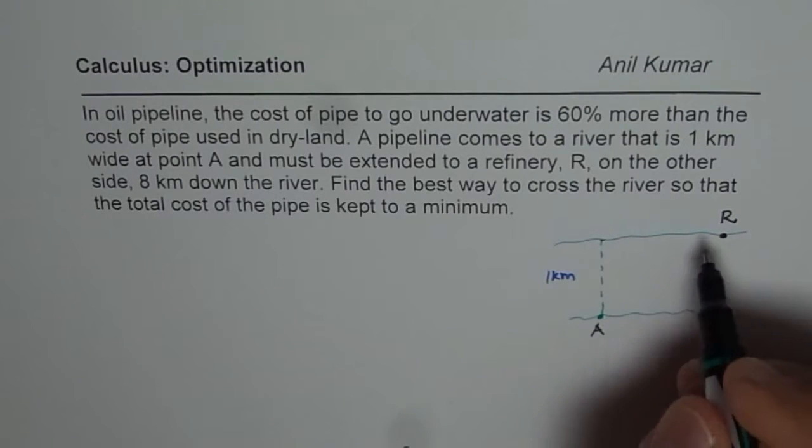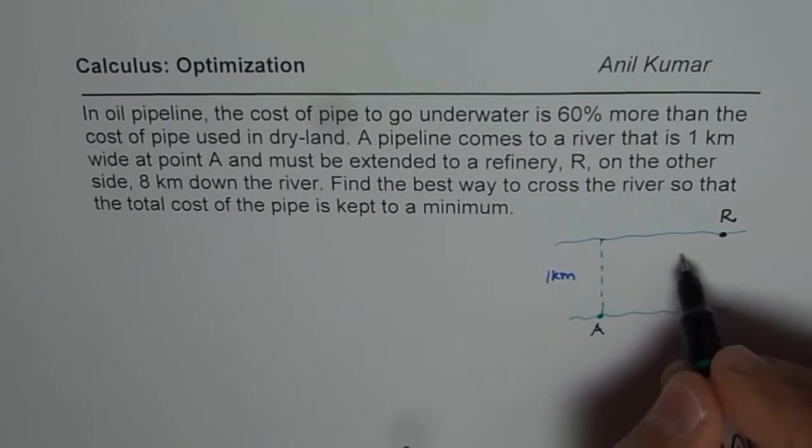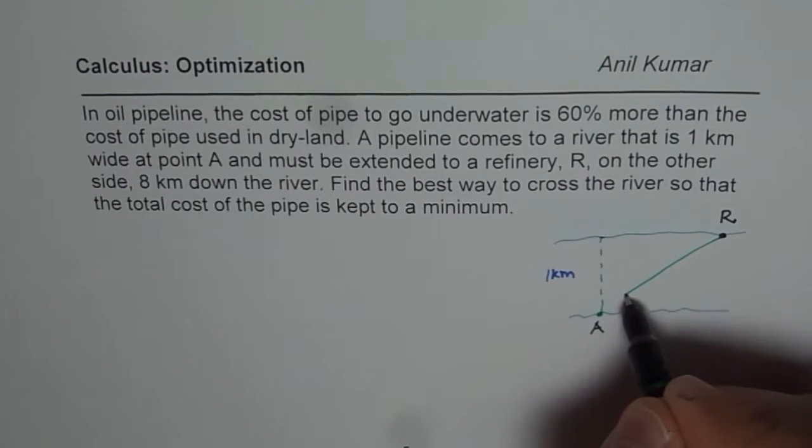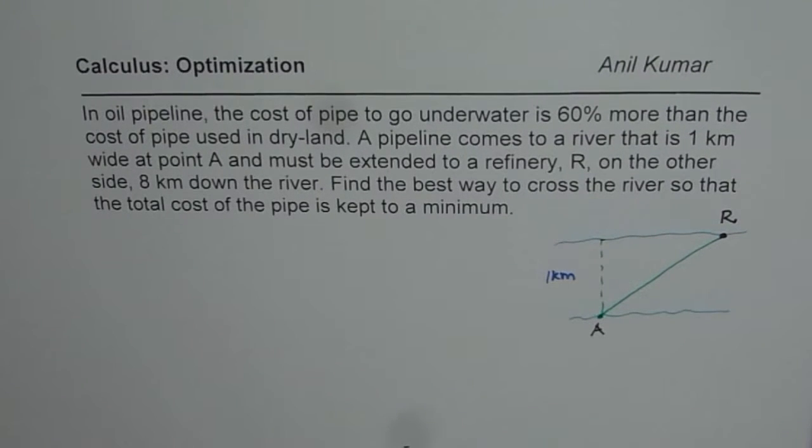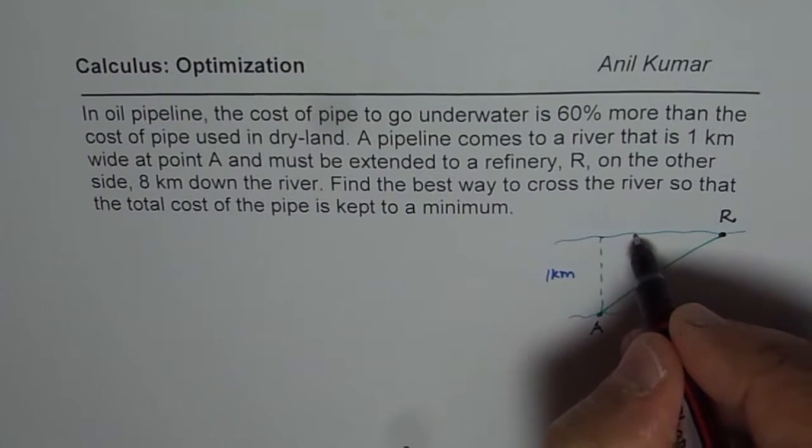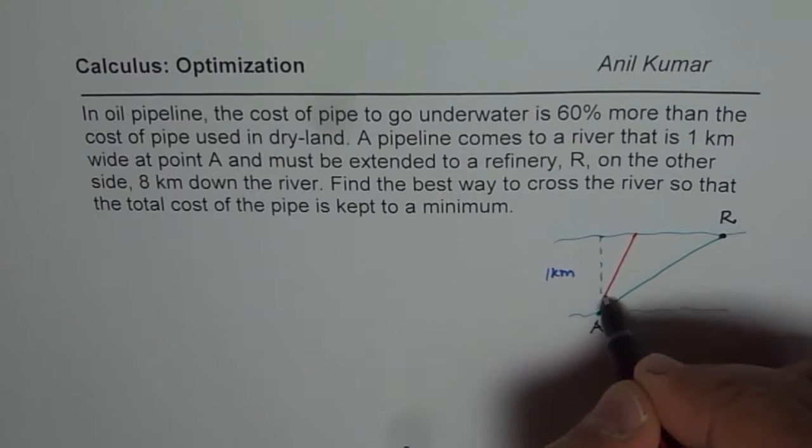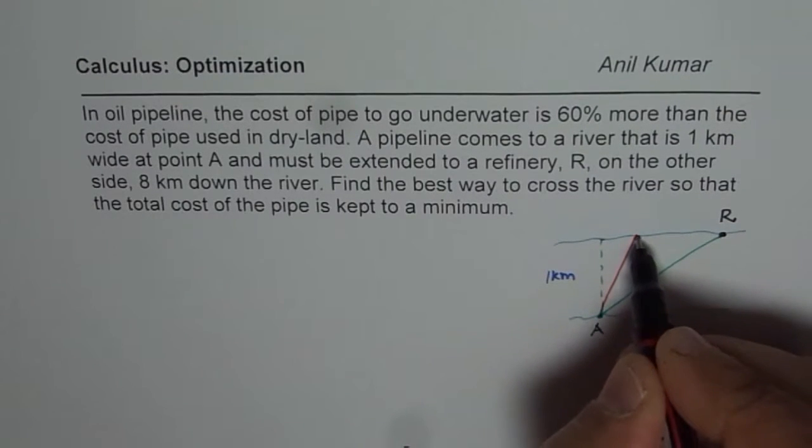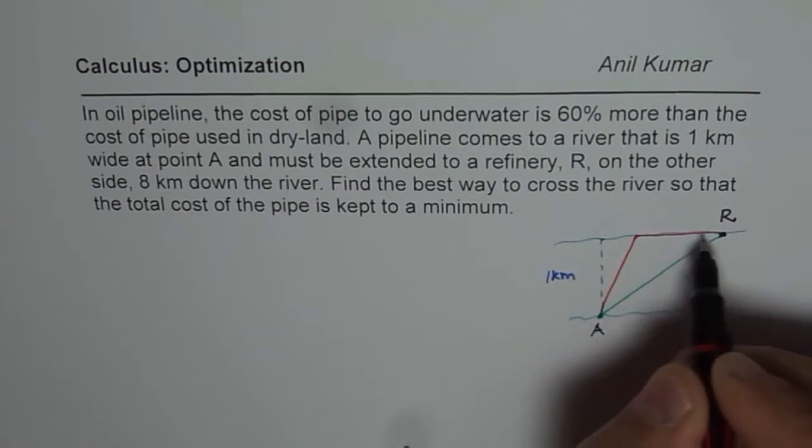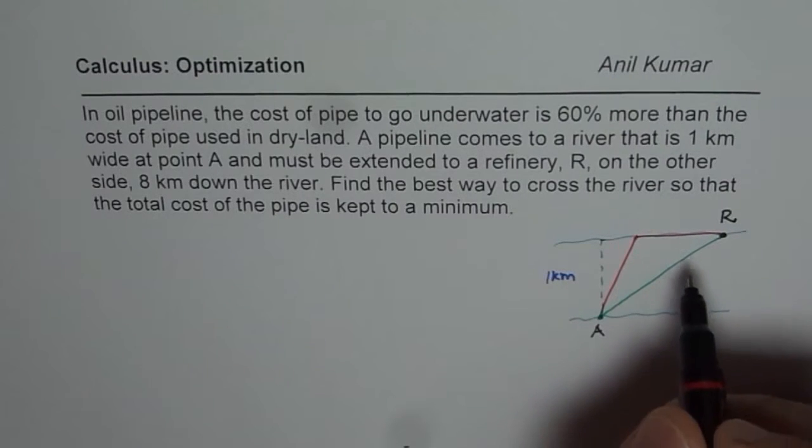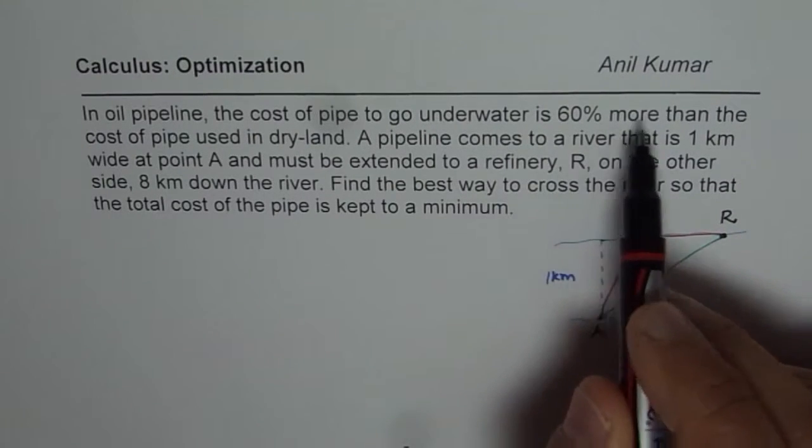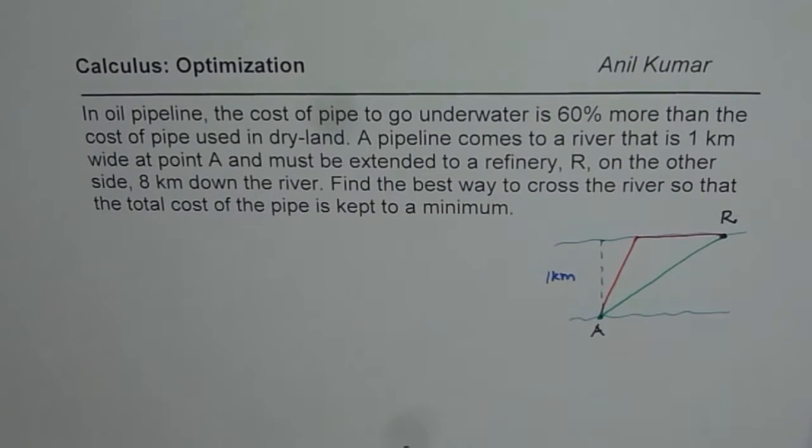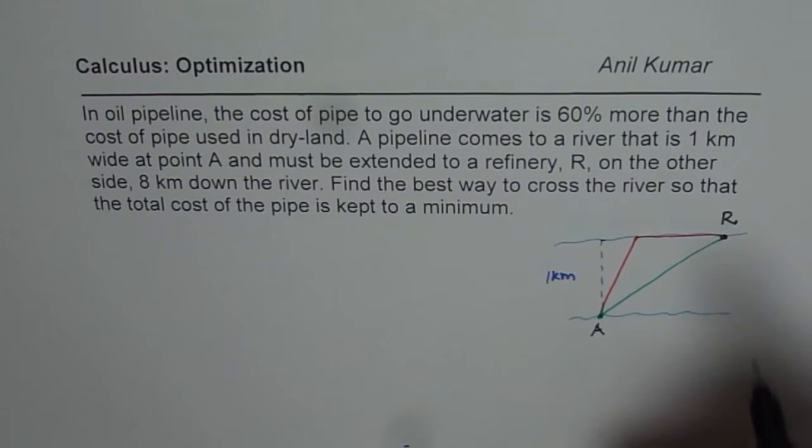Now there are a couple of ways we can go to this point. We could go straight from A directly underwater, or we could lay the pipe to point B and then from there run it to R. That could be cheaper since the underwater pipe laying cost is 60% more. Now we have to find the path which will minimize the cost.